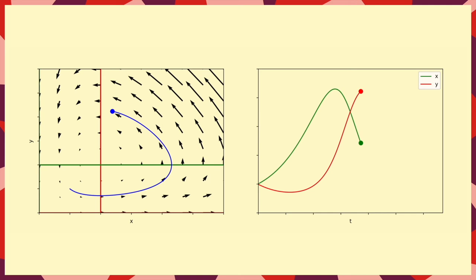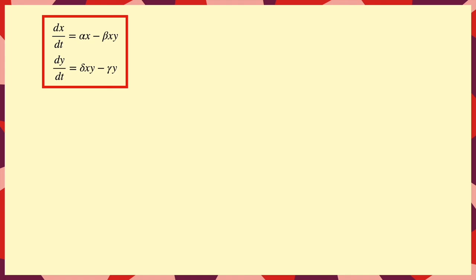But can we prove why this is the case? Well, if we want to do that, we need to look for a conserved quantity, a bit like energy in a physical system. So we need to find some combination of variables whose time derivative is zero.